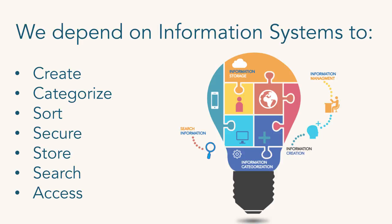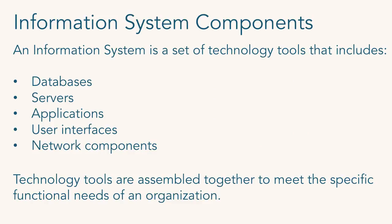Facebook definitely has a lot of databases, as do all these other large consumer products where information is being created. Then you've got to be able to search for it — am I going to Google, is there another search engine, is that part of the information system? Information that can't be found is totally useless. That's one of my mottos: if it can't be found, if it can't be searched, it's of no value. And then how am I going to access that information — via my phone, a browser? All these components need to come into consideration when building an information system.